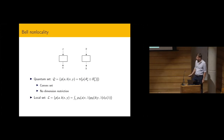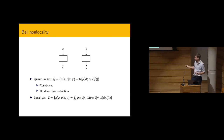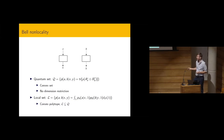There is also the local set, where a classical hidden variable lambda exists such that Alice's outcome depends only on her input and Bob's outcome only on his, and these factorize. Everything writable in this form is called local. This also forms a convex set — in fact a convex polytope — and it is strictly included in the quantum set. This is essentially Bell's theorem: you can achieve more quantumly than classically.